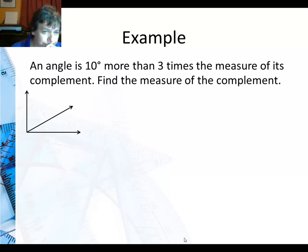So in this problem, the complement, I'm saying an angle is 10 times more than 3 times the measure of its complement. Just to keep things simpler, I'm going to go ahead and say the complement is a smaller angle. And I'm just going to put it right there. And I'm going to call it X. Because I'm comparing the one angle to the complement. So it's going to be 10 plus 3X's.